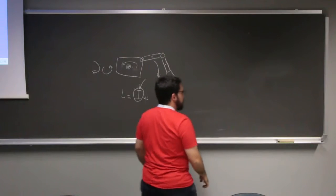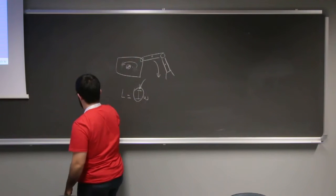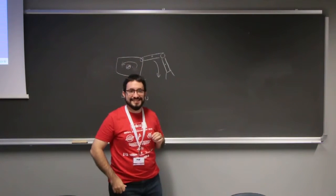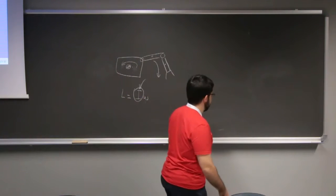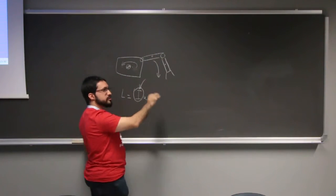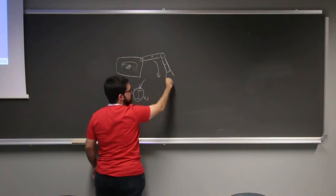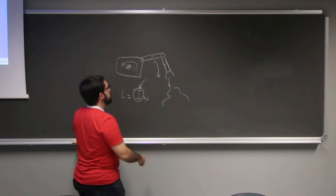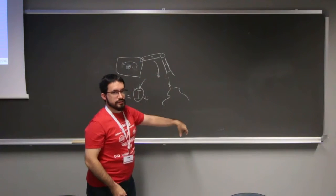Is that counter-rotation a problem? Yes. Because if the robot is moving to reach something, it will never reach it — the base will turn the other way. If you simply try to move the arm to grab an object, the base will counter-rotate and you will never reach it.